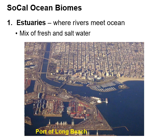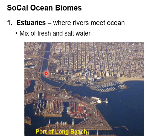Within Southern California there are three different types of ocean biomes. The first are estuaries — where rivers meet the ocean — characterized by a mix of fresh water and salt water, like what you see in the Port of Long Beach at San Pedro Bay where the LA River meets the sea. Things that live in estuaries need to deal with both fresh water and salt water, so you find organisms there that are tolerant of both conditions.